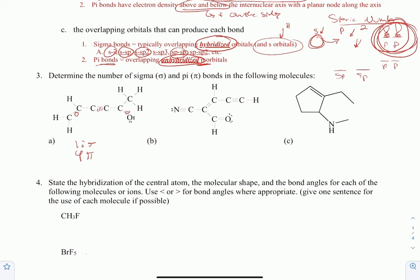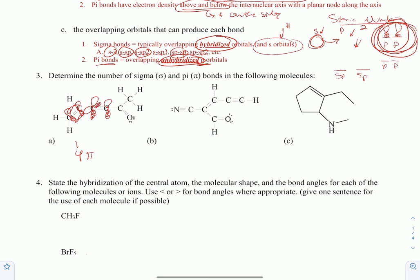Remember, when you see pi bonds, think of a P orbital overlapping above and below the internuclear axis. In a triple bond, you actually have two sets of P orbitals — one coming in and out of the page and one going up and down — both forming pi bonds.